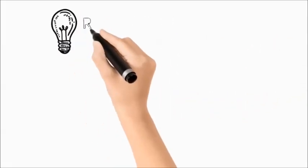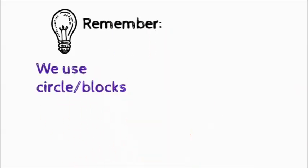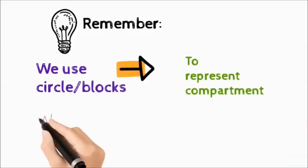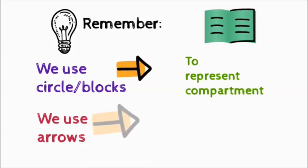Remember, we use Circles or Blocks to represent a Compartment. However, we use Arrows to represent the transition of the drug into and out of the compartment.